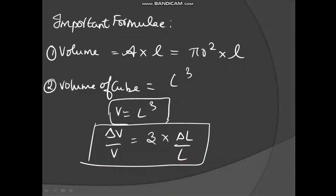You must remember these formulas and substitute accordingly. Volume can be given as area into length, where area is π r² into length. According to the condition, you must remember the appropriate formula.